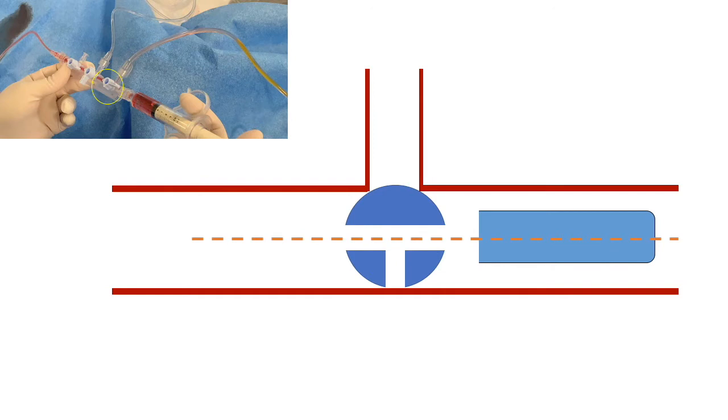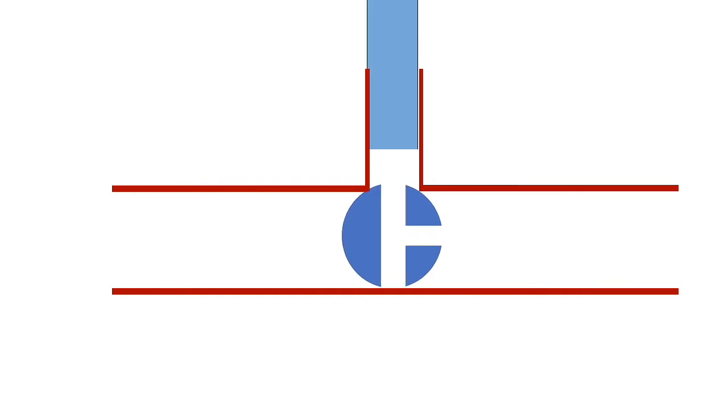This dotted line demonstrates the direction of flow allowed with the valve in this position. Turning the valve to face up will change the formation of the junction. And now we have a different type of communication possible.